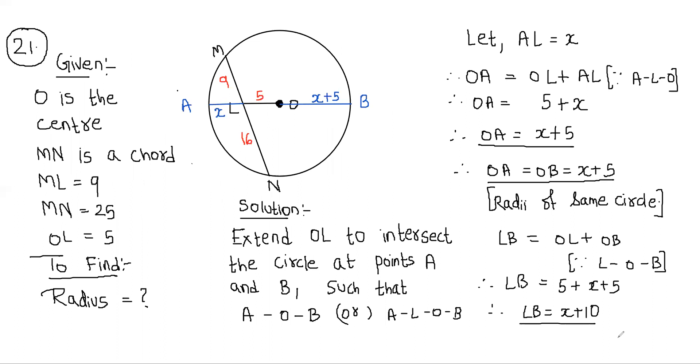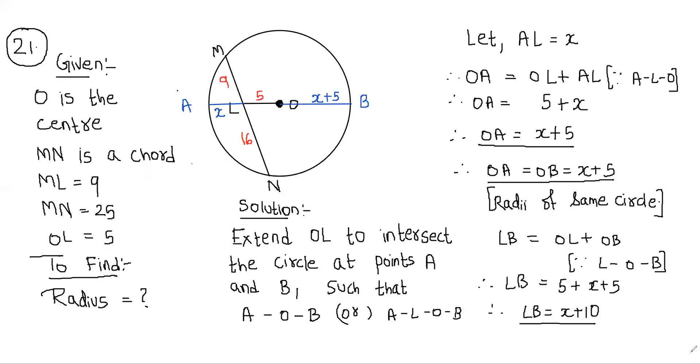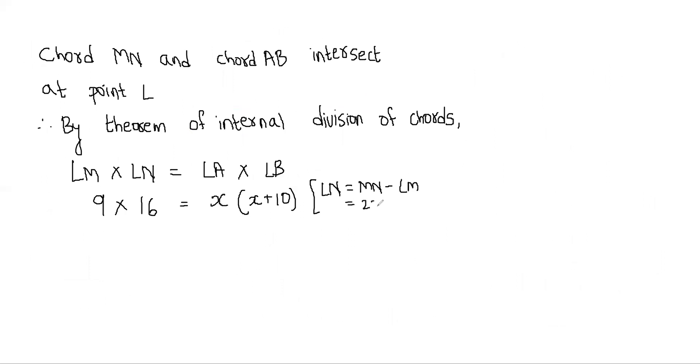LN is equal to, what is LN? It is 25 minus 9. So here LN equal to MN minus LM. LN which is equal to 25 minus 9, which is equal to 16. Now let us solve this: 9 into 16 and X into X plus 10. So we get here 144 is equal to X square plus 10X. Make it a standard form of quadratic equation, so let us shift plus 144 that side, so we get X square plus 10X minus 144 equal to 0.